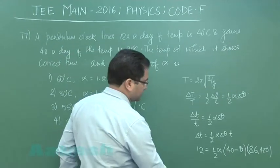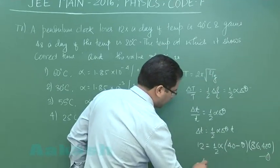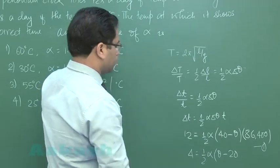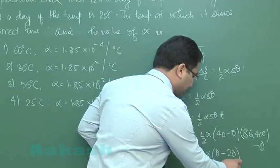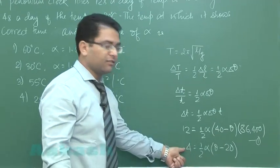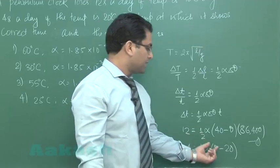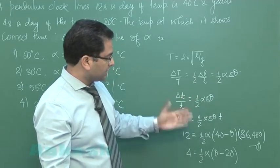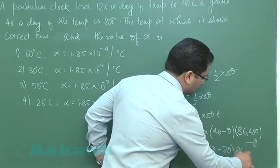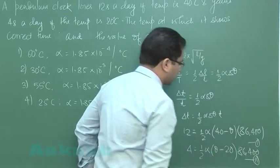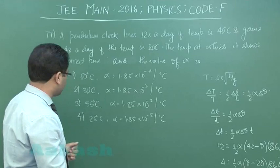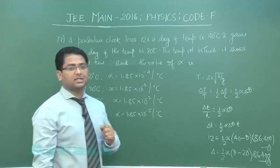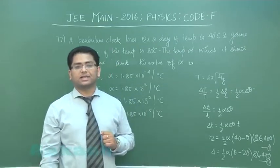In the second case, the clock gains 4 seconds, so equation 2 is: 4 = ½ · α · (θ − 20) · 86400. When the pendulum operates at 20°C it is gaining, so the correct temperature is higher than 20°C. Solving these two equations simultaneously gives the correct option as option number 4. That was question 77; let's move to question 78.